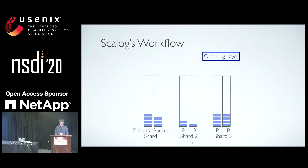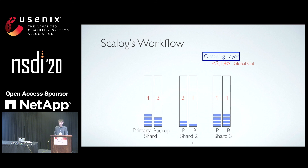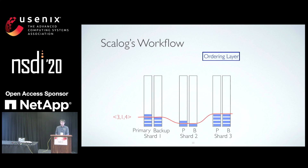This happens in every shard. Periodically, each storage server reports the number of records it has stored to the ordering layer. For example, the first storage server in shard 1 would report 4, the second reports 3, and so on. The ordering layer computes for each shard the minimum value reported by all servers in that shard — this is the number of records that are durable, having been replicated F+1 times. This results in a vector with one entry per shard, called a global cut. In this example, the global cut is 3, 1, and 4. The ordering layer broadcasts the global cut to each storage server, and each storage server uses a pre-agreed deterministic algorithm to individually assign a unique sequence number to each record included in that cut, totally ordering each durable record.